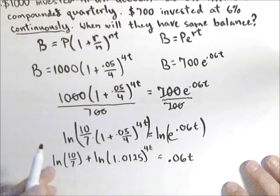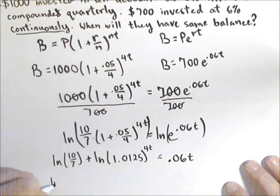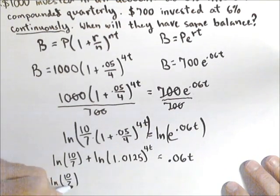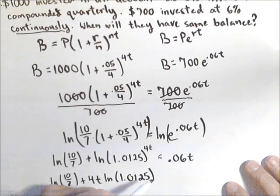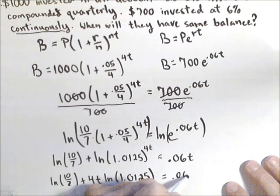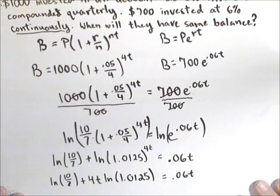Now this exponent can be pulled out front. So we have natural log of 10 sevenths plus 4t natural log of 1.0125 equals .06t. Now, we need to solve this guy for t.